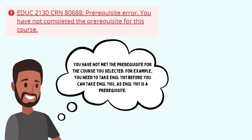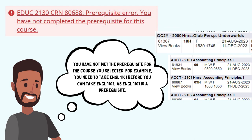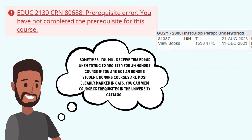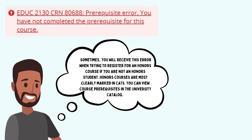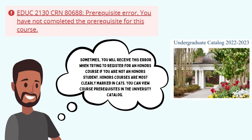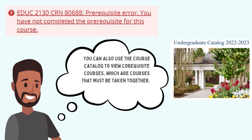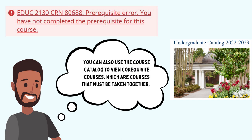This error means that you have not met the prerequisite for the course you selected. For example, you need to take English 1101 before you can take English 1102, as English 1101 is a prerequisite. Sometimes you'll receive this error when trying to register for an honors course if you are not an honors student — honors courses are most clearly marked in CATS. You can view course prerequisites in the university catalog: go to gcsu.edu, select 'Current Students' from the top, then 'Course Catalog' from the important links section, then 'Course Description' from the menu on the right.